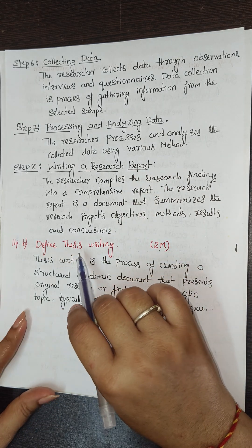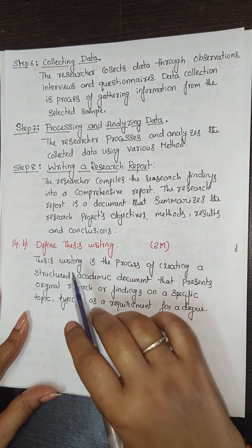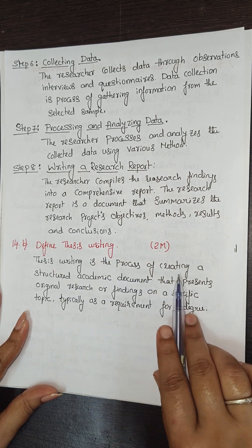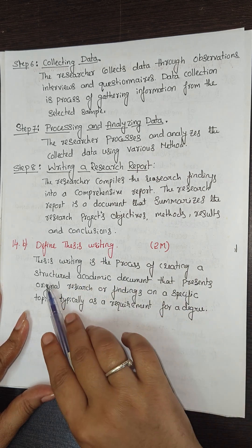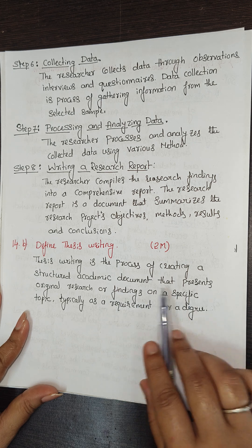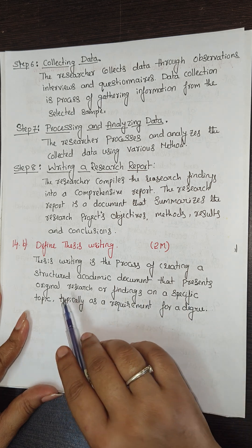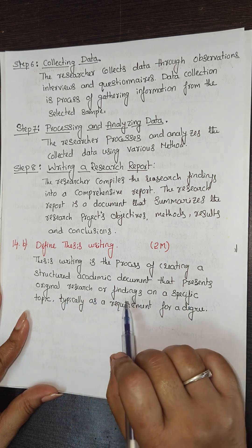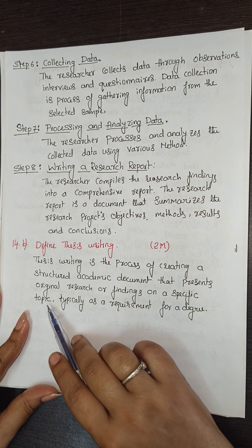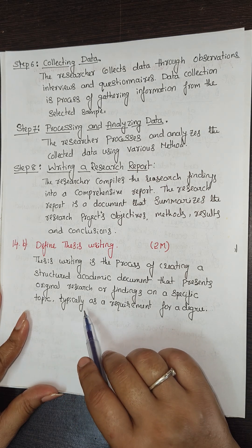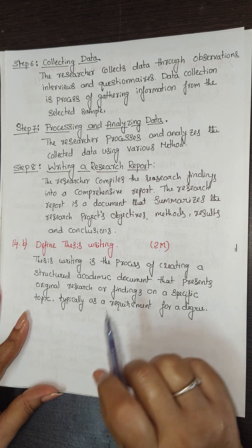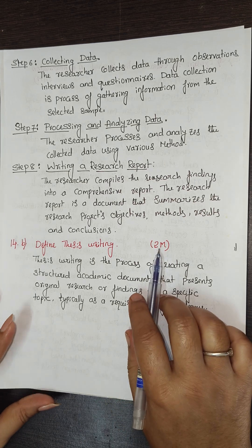Thesis writing is a process of creating a structured academic document that presents original research or findings on a specific topic, and is typically a requirement for a degree. This definition is asked for two marks.